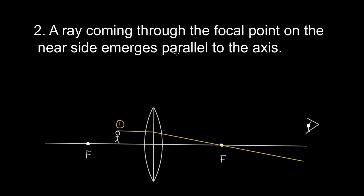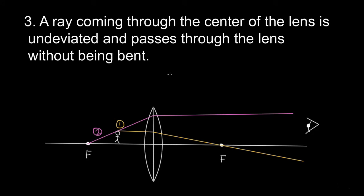For rule two, a ray coming through the focal point on the near side emerges parallel to the axis. Since the focal point is behind the little man in this case, we draw a line from the focal point up across the top of the man to the middle of the lens, and it then emerges parallel to the axis — that's ray two. For rule three, the ray from the top of the little man's head passes through the very center of the lens and is not bent at all.